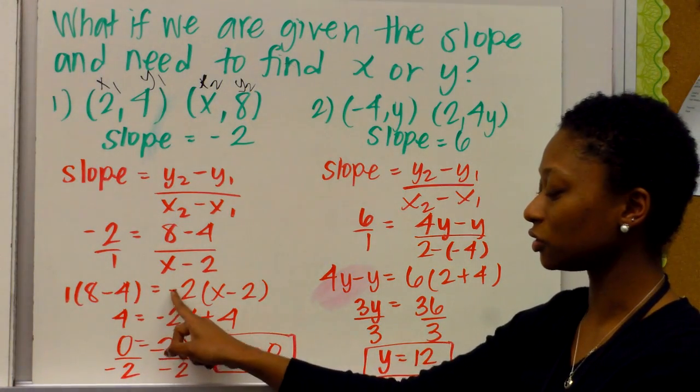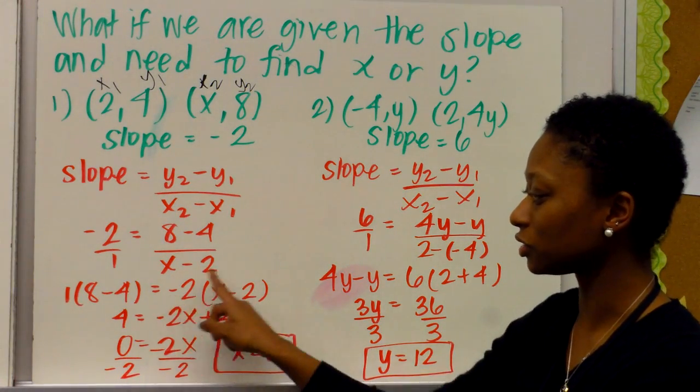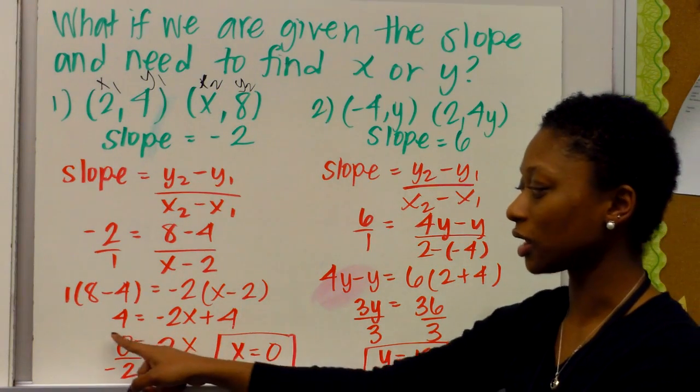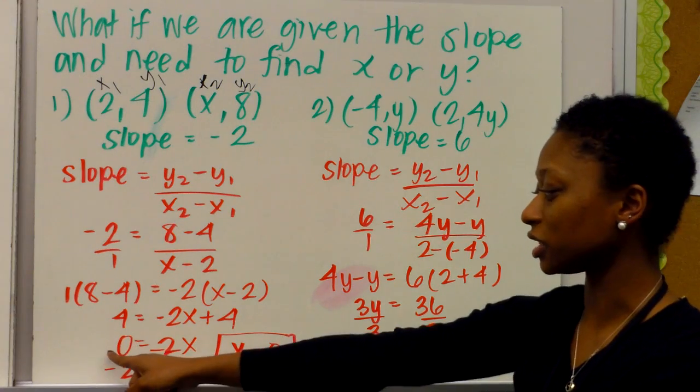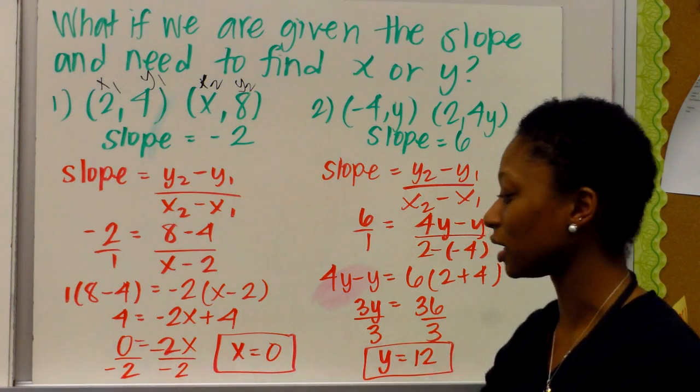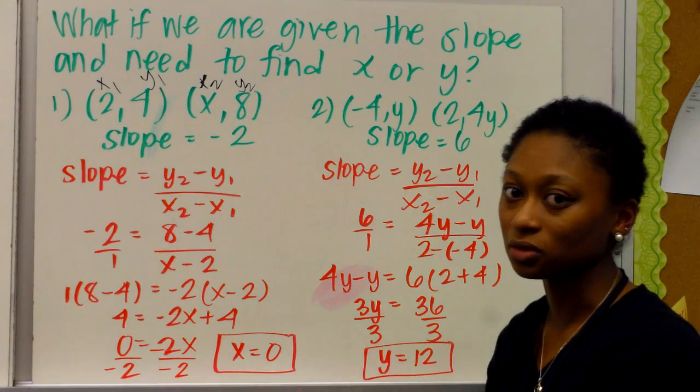negative 2 times x, and negative 2 times negative 2, which is negative 2x, plus 4. From there, we subtract 4 from both sides, 4 minus 4 is 0. So 0 equals negative 2x, if you divide both sides by negative 2, then x equals 0.